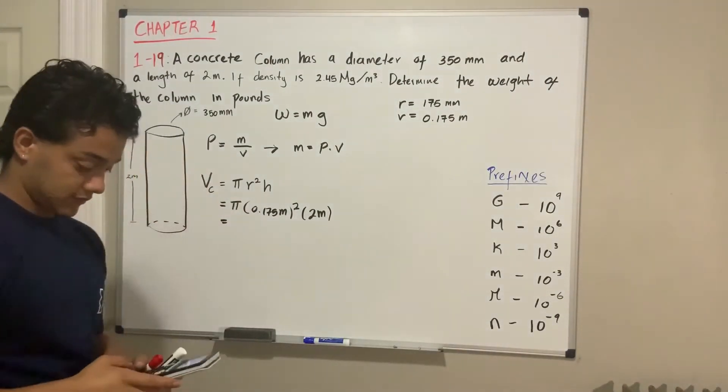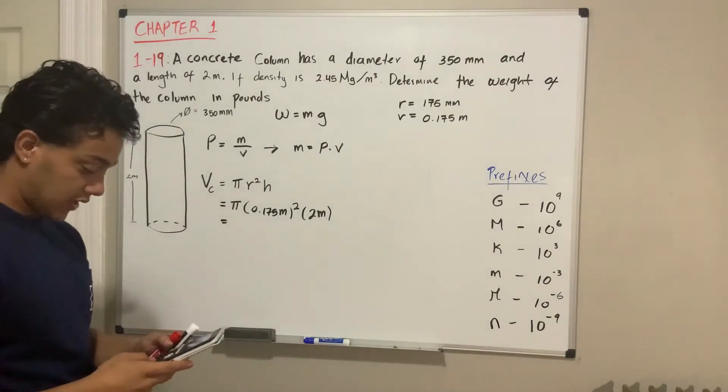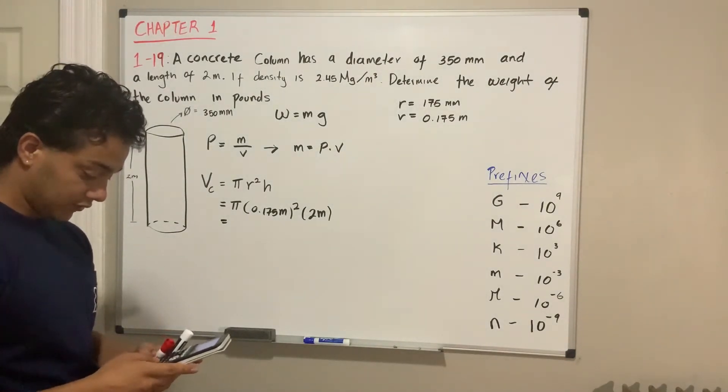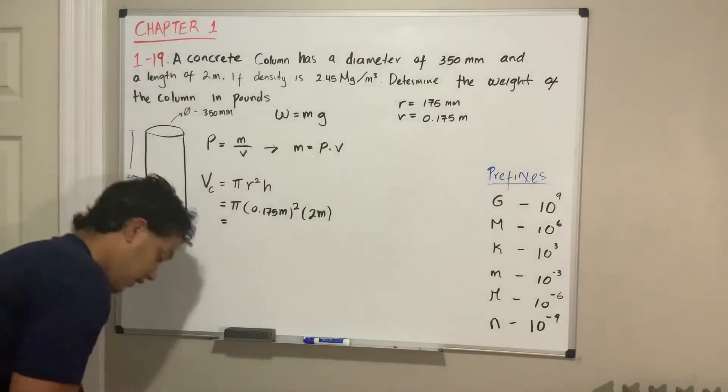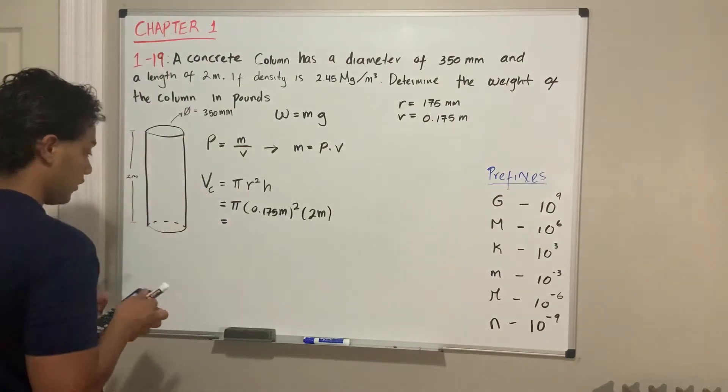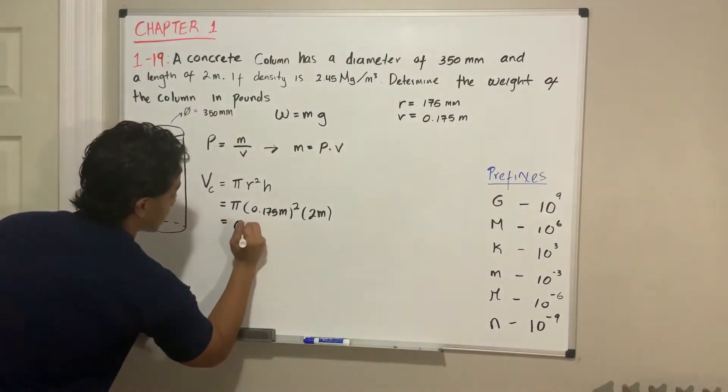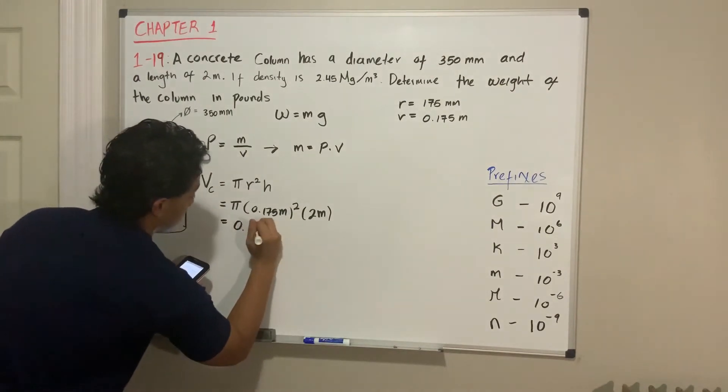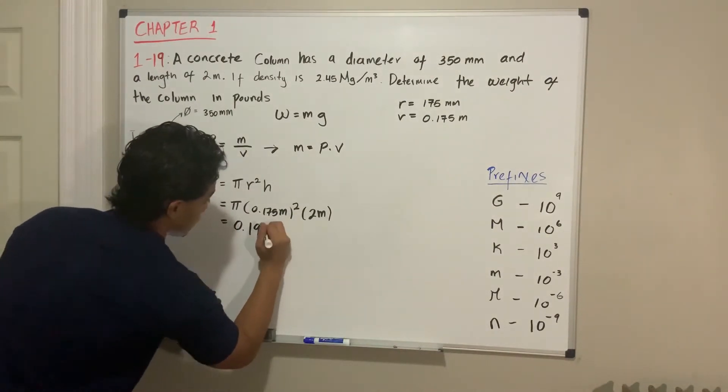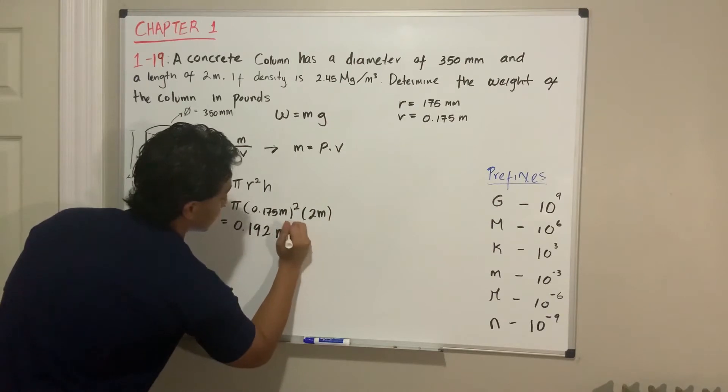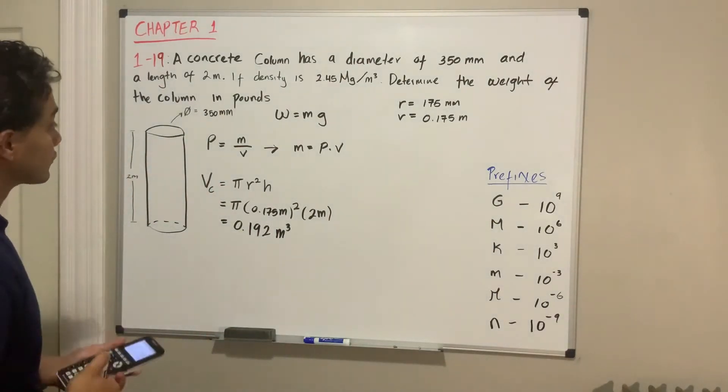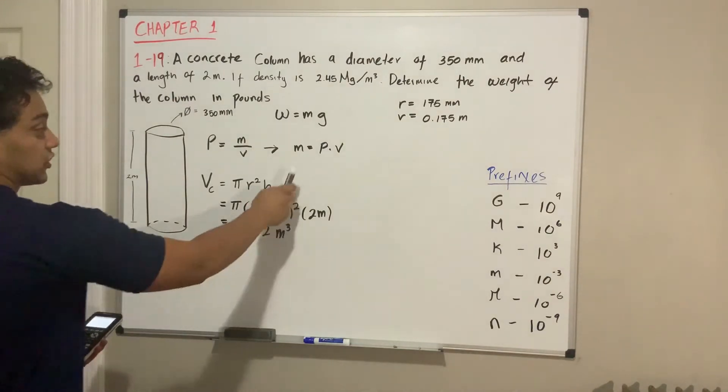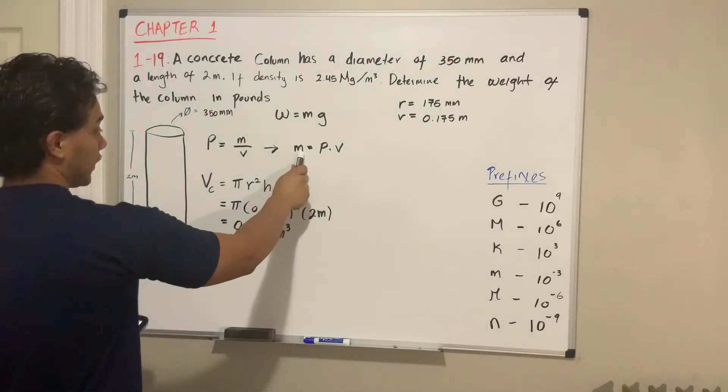Which is pi multiplied by 0.175 squared, multiplied by 2, and we get that the volume of this column is 0.192 cubic meters. So we're gonna use this formula that we derived from the density formula.